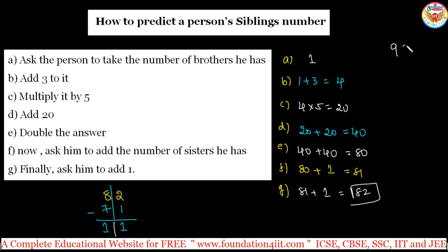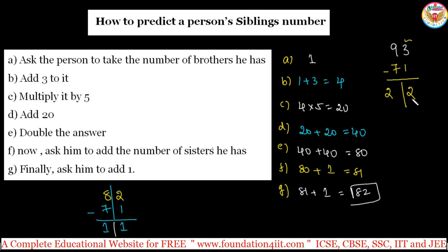Let's try another example. If after all the calculations they get 93, subtract 71 mentally. Units place: 3 minus 1 is 2 — that's the number of sisters. Tens place: 9 minus 7 is 2 — that's the number of brothers. So two brothers and two sisters. If they do the calculation exactly with two brothers and two sisters, they will get 93.